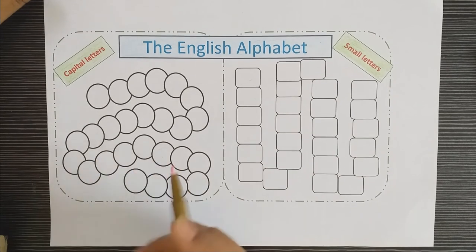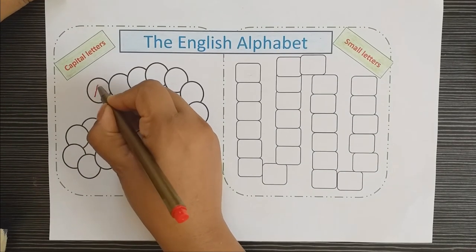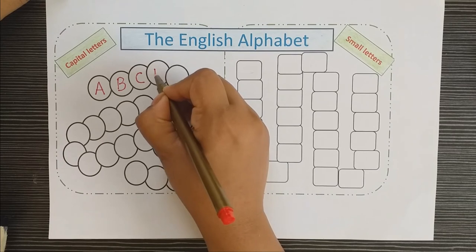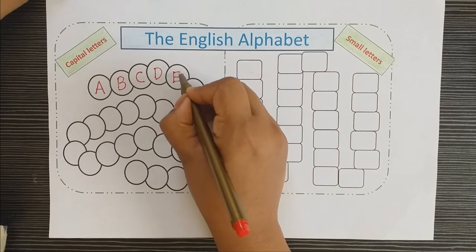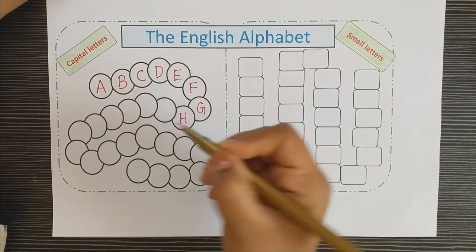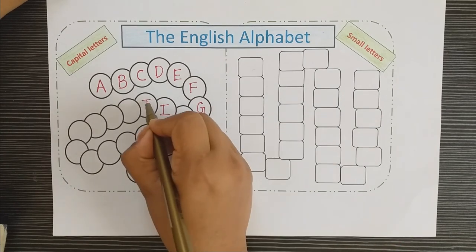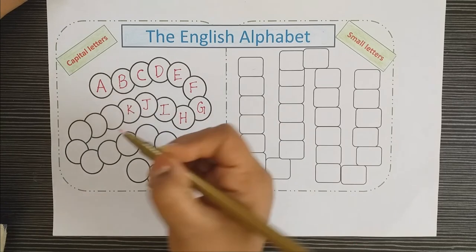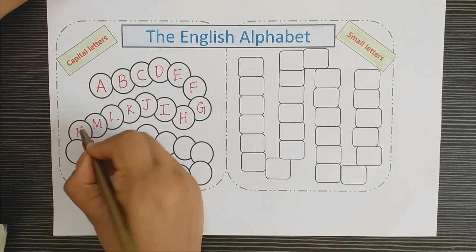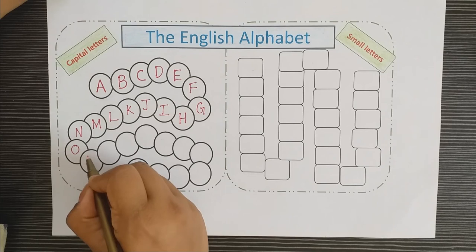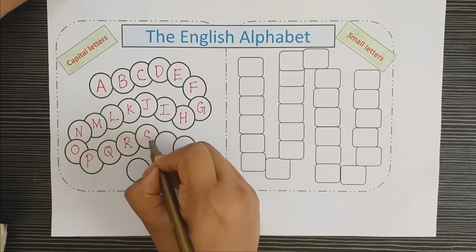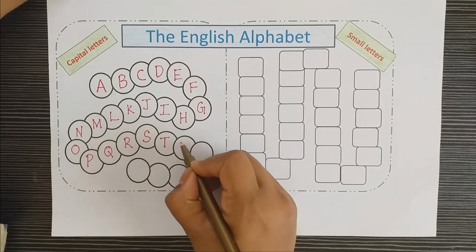Shall we start writing the capital letters first? You can tell and write with me: A, B, C, D, E, F, G, H, I, J, K, L, M, N, O, P, Q, R, S, T, U.